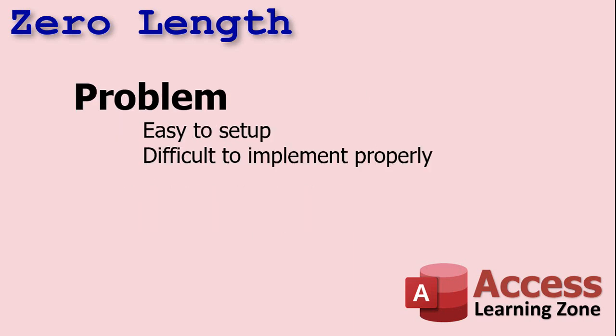As I mentioned earlier, it's easy to set up your database to accept zero length strings. The problem is it's difficult to implement properly — to use zero length string versus null, and to display which one is a zero length string versus null. So we're going to show you how to do that right now.